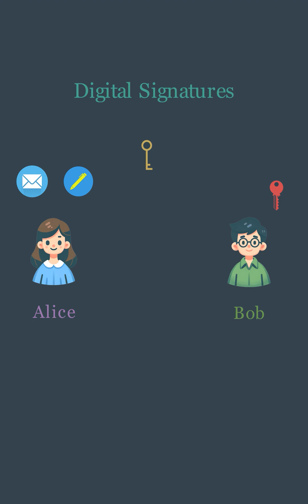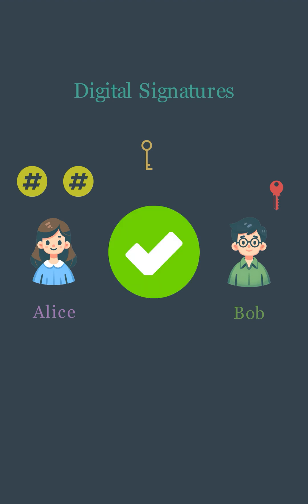Alice receives the message and the signature. First, she generates the hash value of the received message. Then, she decrypts the signature using Bob's public key to retrieve the original hash. If this decrypted hash matches the hash value she generated from the message, it confirms that the data has indeed been signed by Bob and hasn't been tampered with.